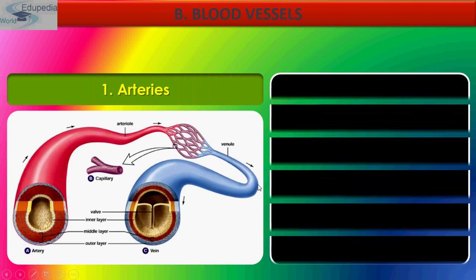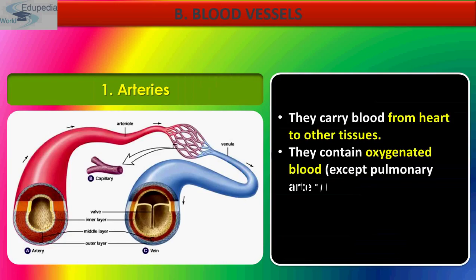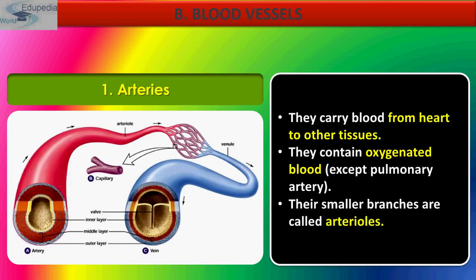This diagram shows that arteries carry blood from the heart to other tissues and contain oxygenated blood, except the pulmonary artery. The smaller branches are called arterioles. When arterioles further divide, they form capillaries. When capillaries join together, they form venules — the smaller branches of veins. When many venules combine, they form veins. Valves are the distinguishing feature found only in veins, not in arteries, though the three layers — tunica externa, tunica media, and tunica intima — are found in both.